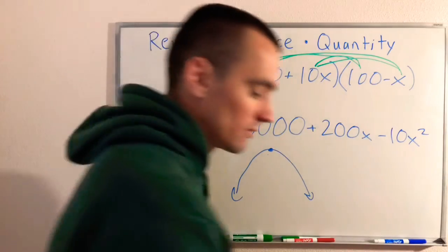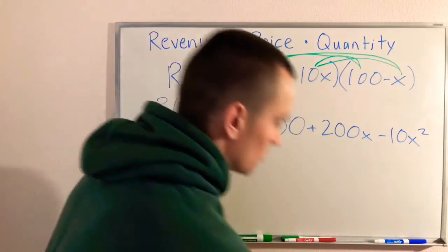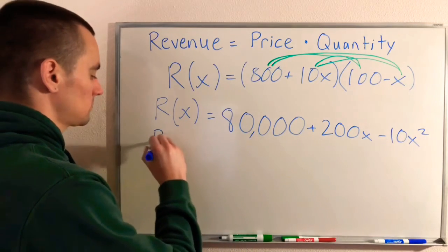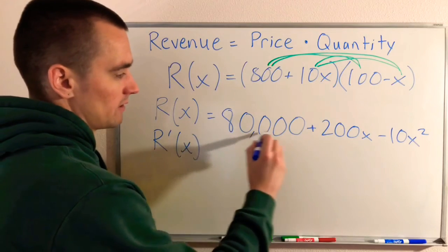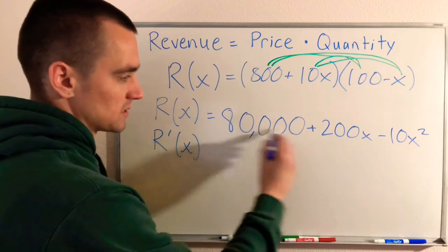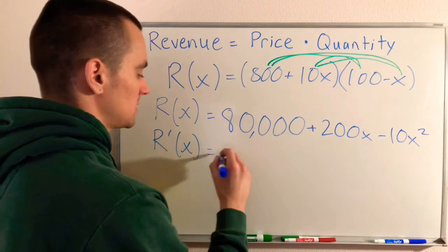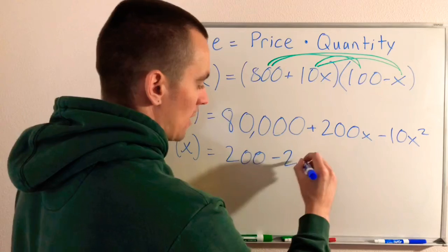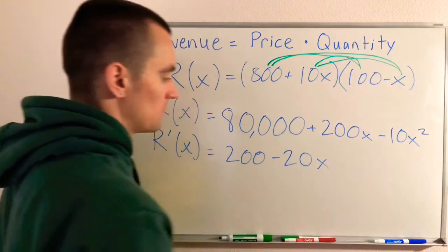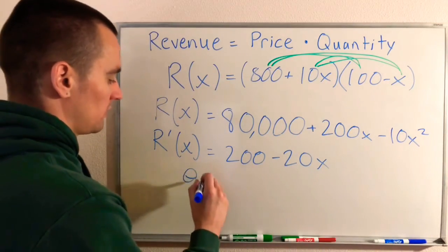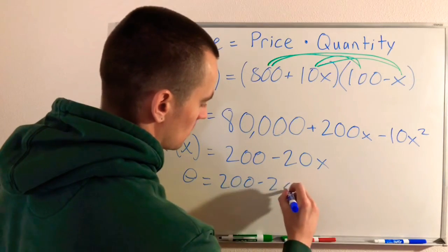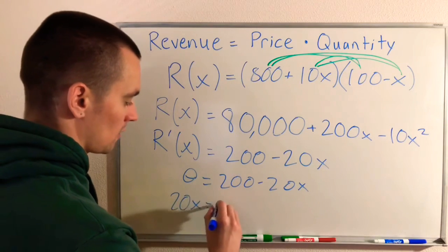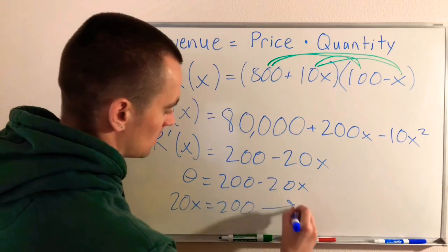To find the critical number, all we have to do is take the derivative and set it equal to zero. The derivative of a constant is zero, so that goes away. The derivative of 200X is 200, and the derivative of negative 10X² would be negative 20X by the power rule. Now we'll set our derivative equal to zero. We can add 20X to both sides, then divide both sides by 20, leaving us with X = 10.